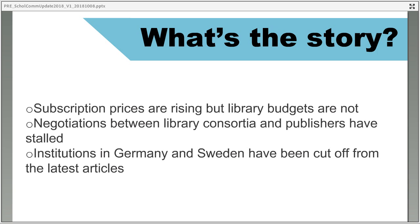Reaction from the research community is mixed. Some people are quite rightly outraged because they expect to access the latest articles through their university subscription and find they can't. But quite a lot of researchers understand the library's position and think this is actually a good thing, since the millions of pounds, euros, and dollars spent with publishers could be better spent on research. However, some people are turning to slightly less than legal methods of accessing research, which we'll come on to next.